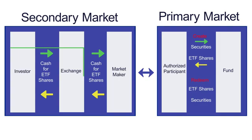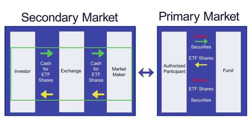Investors are trading on an exchange and they may be transacting with another investor who is selling their shares — at that point the transaction is done, you've paired off a buy and a sell. But most likely an investor will be transacting with a market maker who is providing liquidity to buy or sell shares of the ETF. They will be pricing that ETF based on the fair value — where they can sell the ETF and buy the underlying basket — and that is what's known as the arbitrage mechanism.